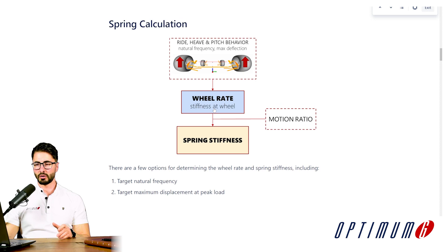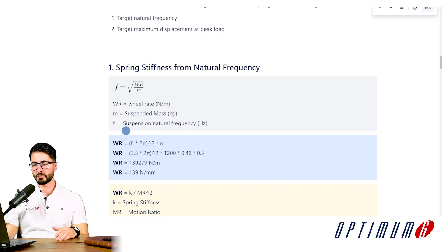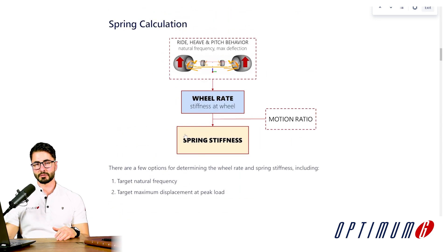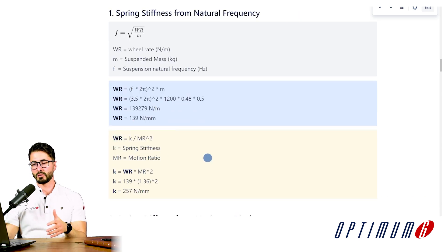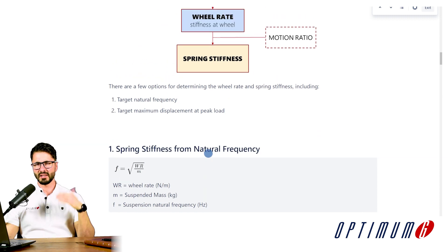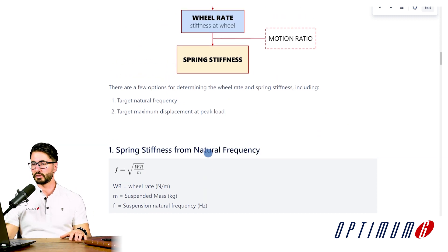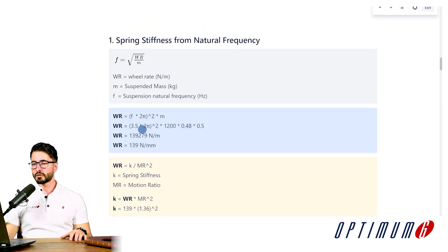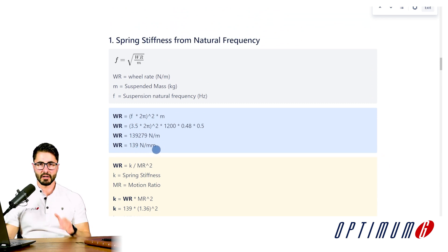We find this equation over here. Each step of the process has a different color — so for calculating wheel rate it's blue, for calculating spring stiffness it's yellow, and so on. This is going to be valid for this entire document to make it easier for you to review by yourself later on. Once we apply this equation, we can calculate that in order to achieve a frequency of 3.5 Hz, we need a wheel rate of 139 N/mm. Please be very careful with units when using these equations.